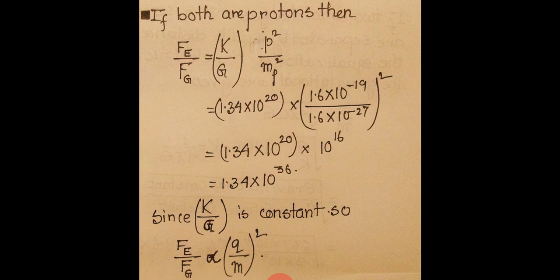For two protons, using the charge-to-mass ratio for a proton, the ratio of electric to gravitational force is of the order of 10^36. The difference from the electron case (10^42) is because the electron and proton share the same magnitude of charge but the proton mass is 1836 times that of the electron. Since K/G is a universal constant, the ratio of electric to gravitational force is proportional to (q/m)^2.